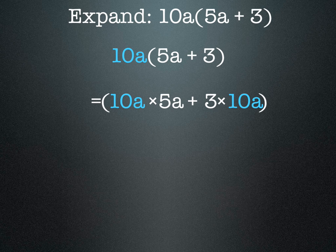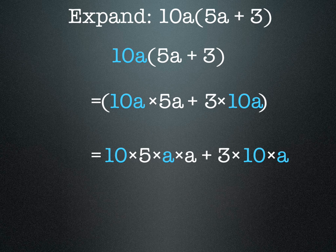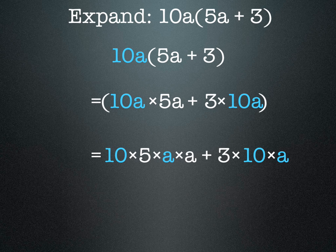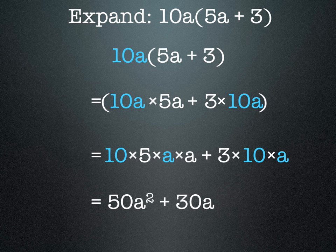So 10a × 5a is really 10 × 5 × a × a, and then we have adding that to 3 × 10 × a. So 5 × 10 is 50, a × a is a², so we get 50a². Then 3 × 10 × a is 30a, and so we've expanded that expression.